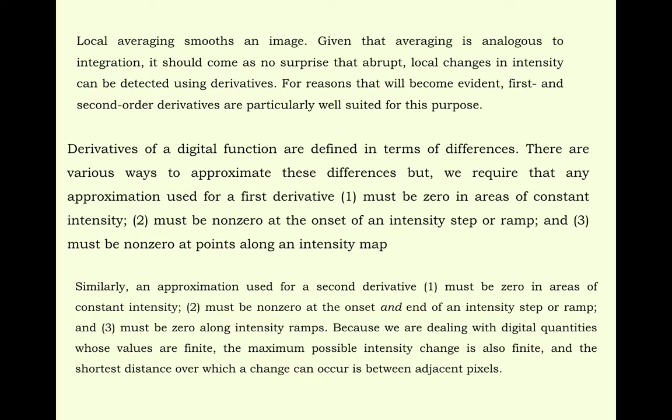We require that any approximation used for a first derivative: 1 must be zero in areas of constant intensity, 2 must be non-zero at onset of the intensity step or ramp, and 3 must be non-zero at points along an intensity ramp. Because we are dealing with digital quantities whose values are finite, the maximum possible intensity change is also finite and the shortest distance over which a change can occur is between adjacent pixels.